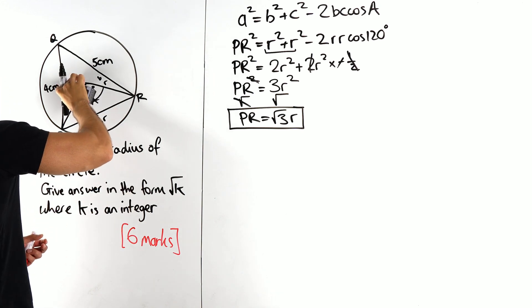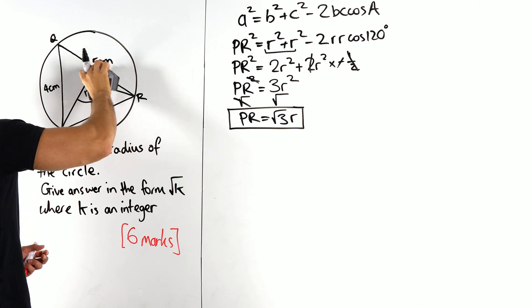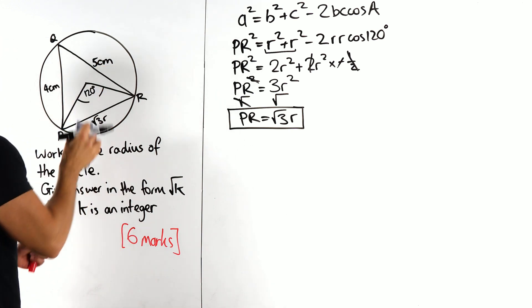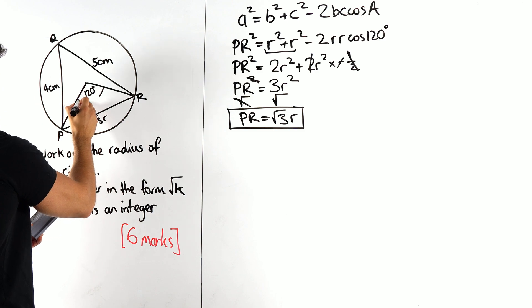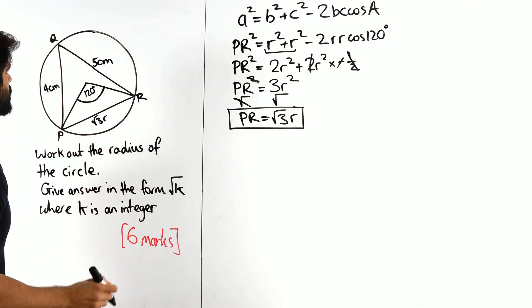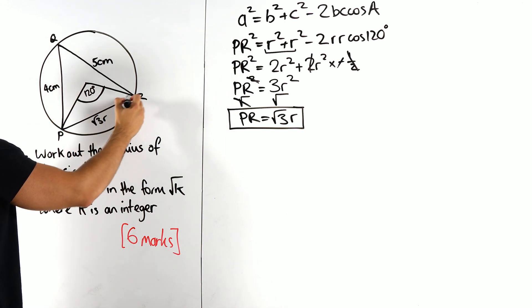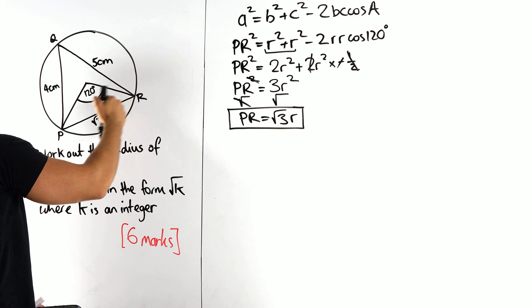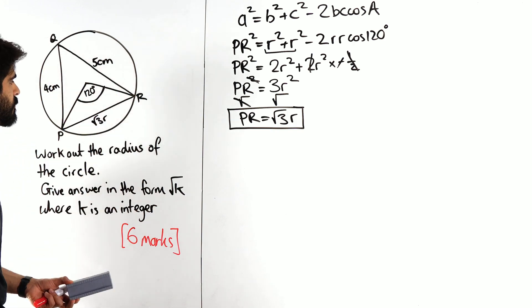So we now have this length here is root 3r. Now if we look at the wider triangle, I'm just going to remove these bits so you can see better. If we look at this wider triangle, we have these three lengths. It's a scalene triangle, all the lengths are different.